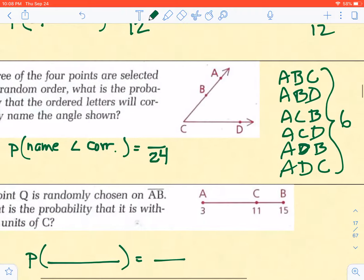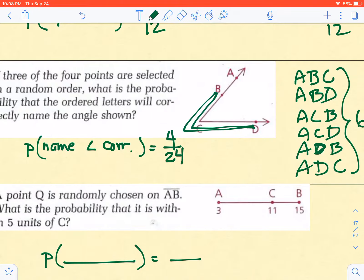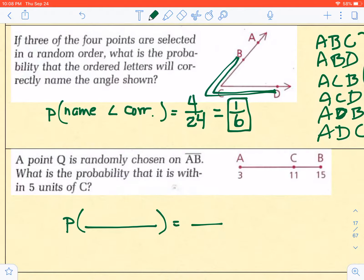Now to find the number that would be correct, notice BCD would be one, and you could also go in a backwards direction. And likewise, there would be from A to C to D and backwards as well. So that means that there are four total. This would reduce down to one-sixth. Don't even bother putting that into a decimal or a percent.